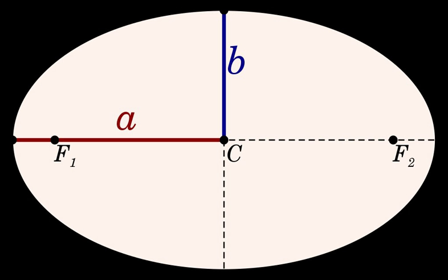A parabola can be obtained as the limit of a sequence of ellipses where one focus is kept fixed as the other is allowed to move arbitrarily far away in one direction.